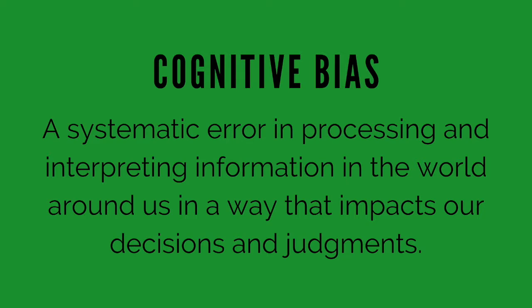Cognitive bias is one of those terms that we often hear, but unless you took a psychology 101 class in college, you might not be super familiar with what it actually means. Generally speaking, a cognitive bias is a systematic error in processing and interpreting information in the world around us that impacts our decisions and our judgments.